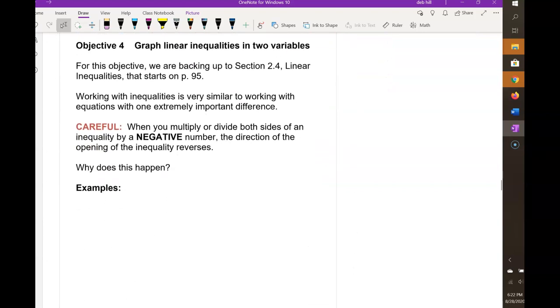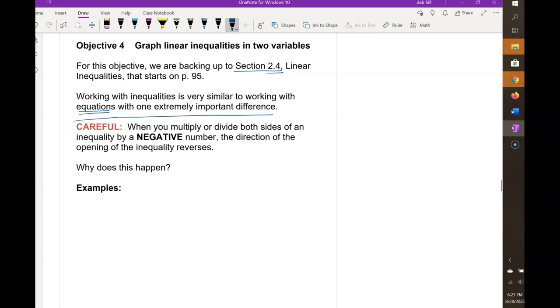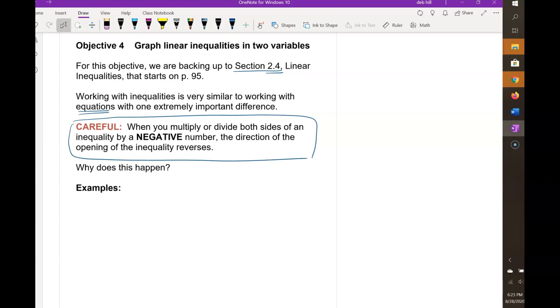Our fourth objective is to graph linear inequalities in two variables. We already started talking about this, and this is in section 2.4. Working with inequalities is very similar to the work you do with equations with one really important difference. Remember that if you multiply or divide both sides of an inequality by a negative number, the direction of the opening of the inequality reverses. Let's talk about why that happens.